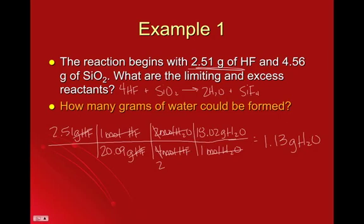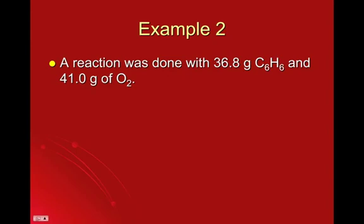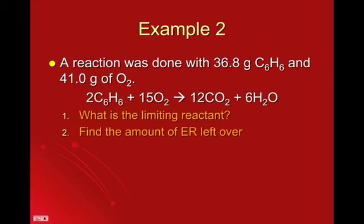Okay, so those are the three types of questions that you could possibly be asked about limiting reactants. And all I have left is just two more examples of the exact same stuff, just with different reactions this time. So a reaction was done with 36.8 grams of C6H6, which is benzene, and 41 grams of oxygen. There's your reaction. I want to know first, what's the limiting reactant, and then second, how much of the excess reactant is left over.